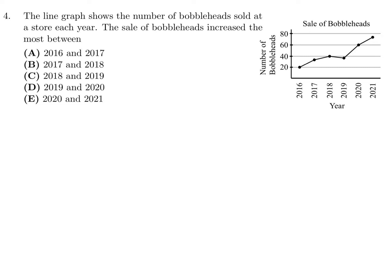The line graph shows the number of bobbleheads sold at a store each year. The sale of bobbleheads increased the most between which years? You can approximate: this is 20, this is about 35, this is 40, this looks like maybe 38, this is 60, and this looks like maybe 72. It looks like it increased the most from 2019 to 2020, so that would be D.